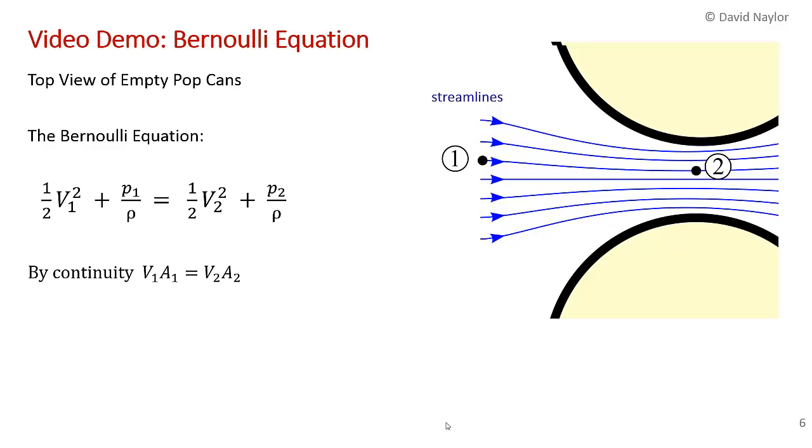Now, by continuity, as I mentioned, when you go from point 1 to point 2, the cross-sectional area of the flow gets restricted. This is an incompressible flow, so V1A1 equals V2A2. And A2 is less than A1.